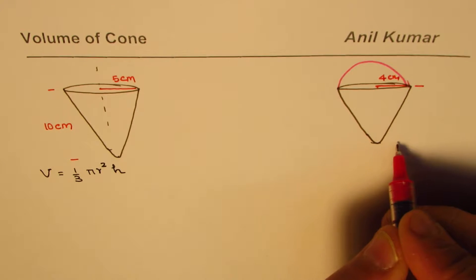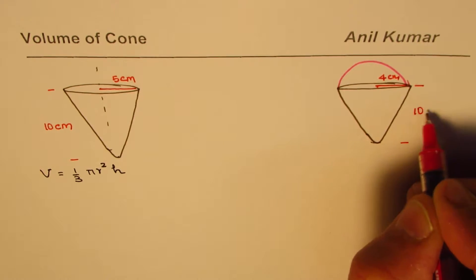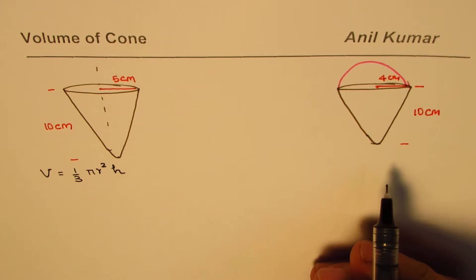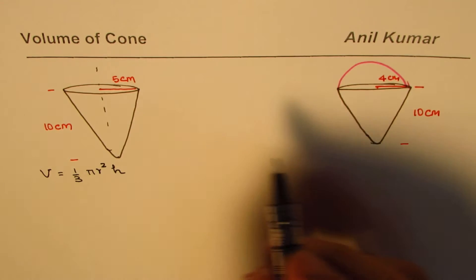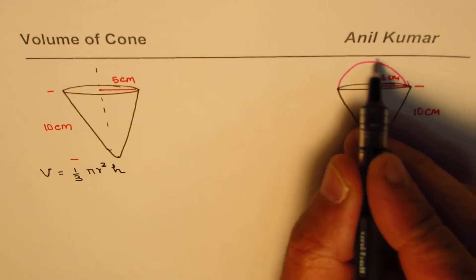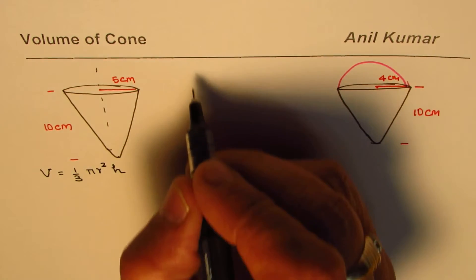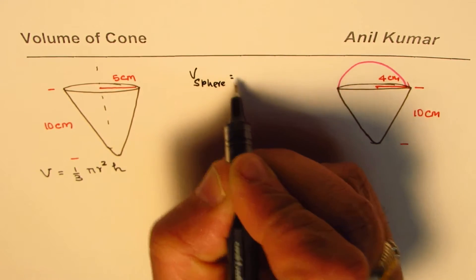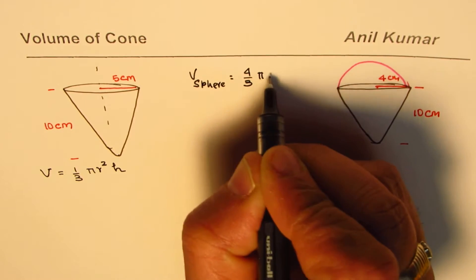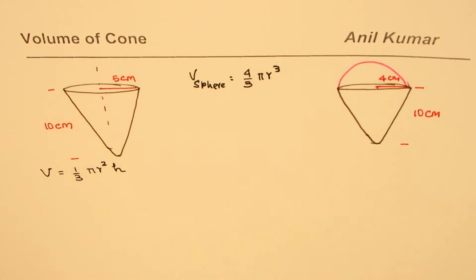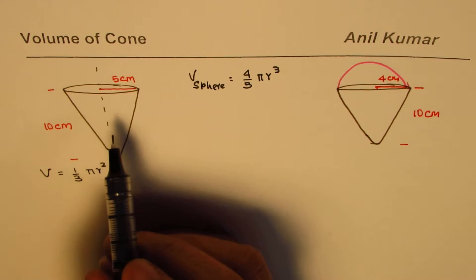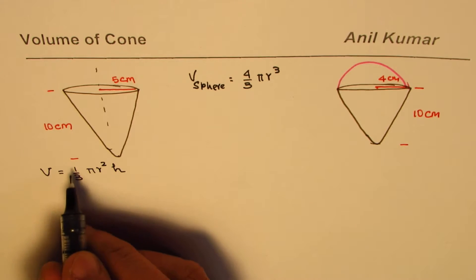These are two cones and you need to find volume of these cones. The formula is volume of a cone. We also have volume of a sphere which is 4 by 3 pi r cube. You can use these formulas to calculate. Let's begin our calculations first for the cone. The volume is 1 by 3 pi r square h.